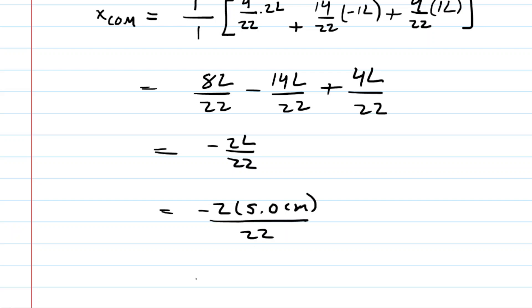And we get negative 2L over 22. The question noted that L was equal to 5 centimeters, so we can put that in. Punch that into your calculator, and you will get an approximate x-coordinate of the center of mass of negative 0.45 centimeters. This is the correct answer to part A.